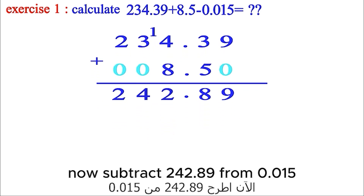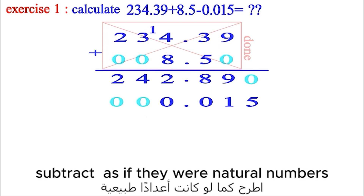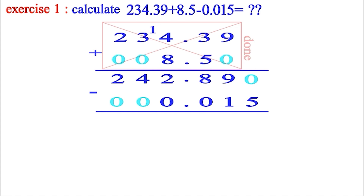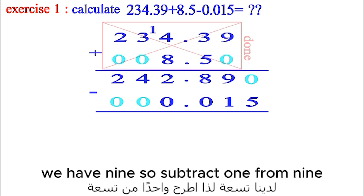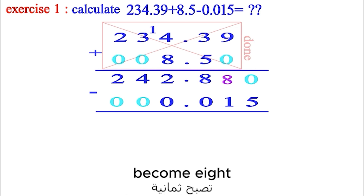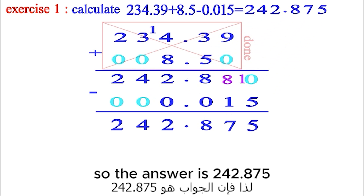Now subtract 0.015 from 242.89. Put zeros in empty places. Starting right to left: 0 minus 5 — can't subtract, so borrow from 9, which becomes 8, and 0 becomes 10. 10 minus 5 is 5, 8 minus 1 is 7, 8 minus 0 is 8. Put the dot. 2 minus 0 is 2, 4 minus 0 is 4, 2 minus 0 is 2. So the answer is 242.875.